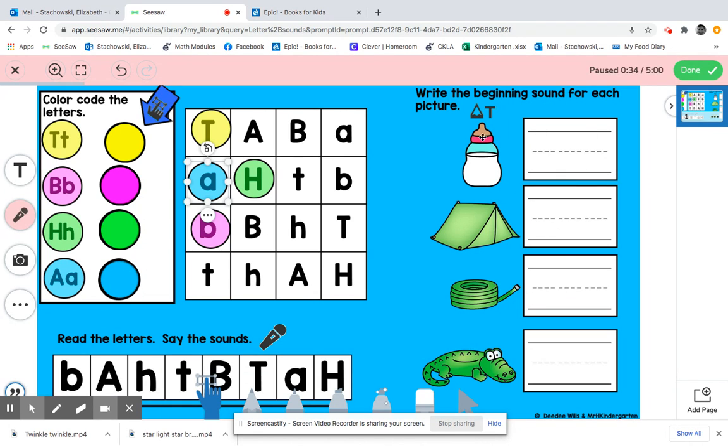Then on this side right here says write the beginning sound for each picture. You are going to come over to here where the T is. You're going to click on the T. You can drag the box over. Please let your child tell you what is this picture. Let them say it is a bottle,